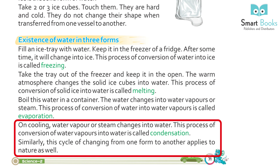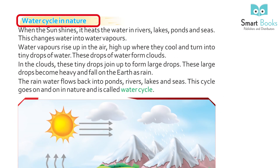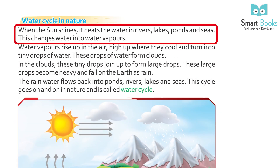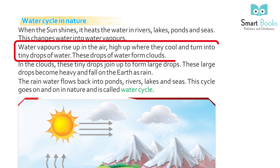Water cycle in nature: when the sun shines, it heats the water in rivers, lakes, ponds, and seas. This changes water into water vapors. Water vapors rise up in the air, high up where they cool and turn into tiny drops of water.